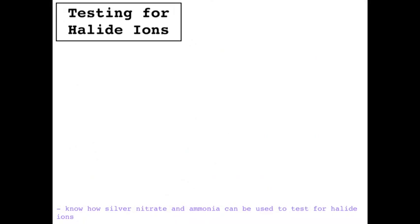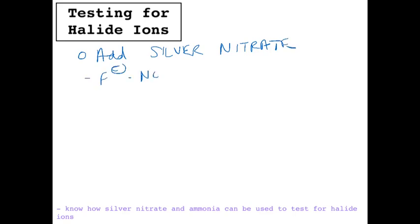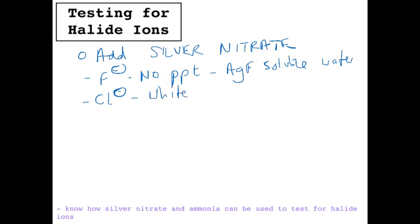In summary, to test for halide ions, first add silver nitrate. Fluoride ions give no precipitate, because silver fluoride (AgF) is soluble in water. Chloride ions give a white precipitate. Bromide ions give a cream precipitate. Iodide ions give a yellow precipitate.